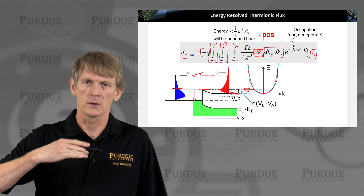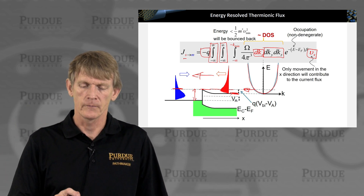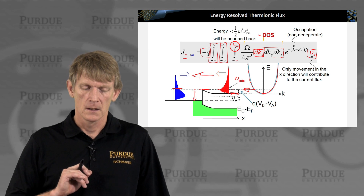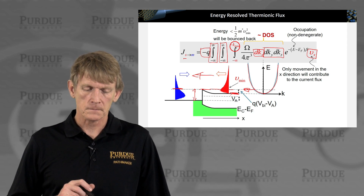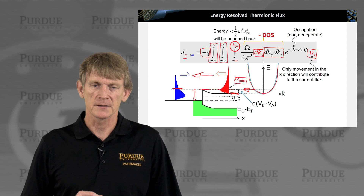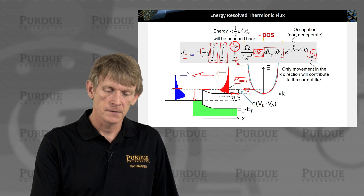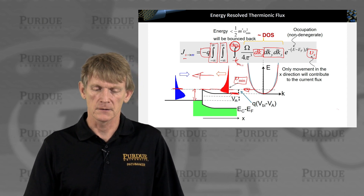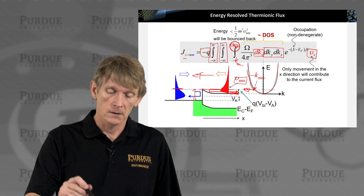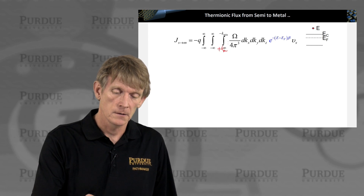We're thinking of a constant energy surface and wanting to migrate up in energy, but we still have an integration over k, and we're only interested in the carriers in this direction. This k_min corresponds to a minimum velocity that the carriers must have. I think this should actually be minus k_min to infinity — so this is actually an error in this slide. We're integrating from k_min all the way up, and I think this should be plus k_min to infinity.